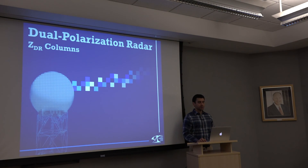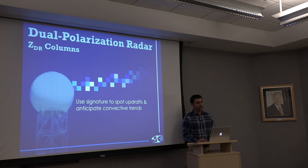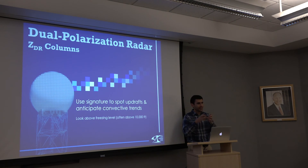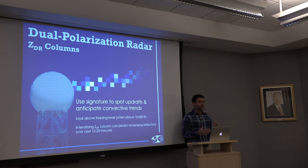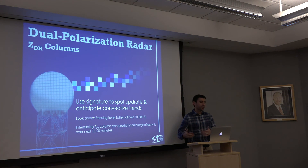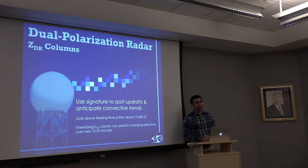ZDR columns — what can we expect and how do we want to use them? We use that signature to spot updrafts and anticipate convective trends. Look above the freezing level — often above 10,000 feet — to see those raindrops stand out from frozen particles, where the updraft is injecting supercooled liquid water above the freezing level. An intensifying ZDR column can predict increasing reflectivity over the next 10 to 20 minutes; with stronger supercells perhaps a longer time range, and with more individual cells more on the range of about 5 to 10 minutes in predictive capability.